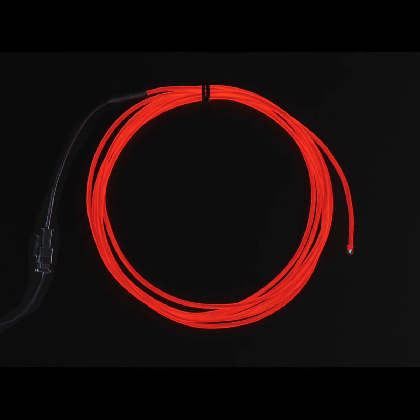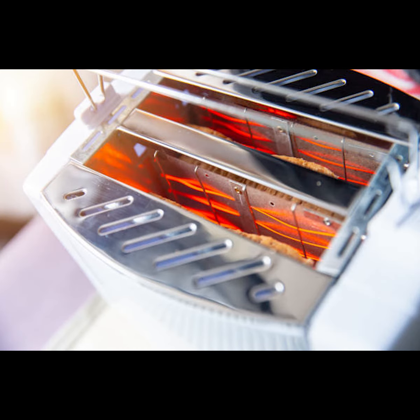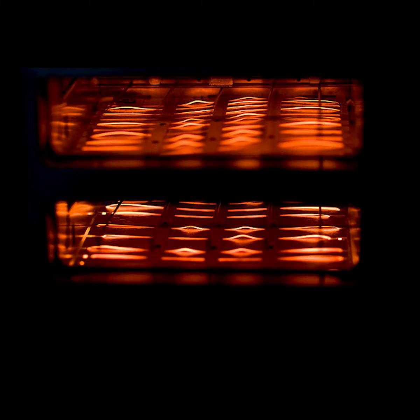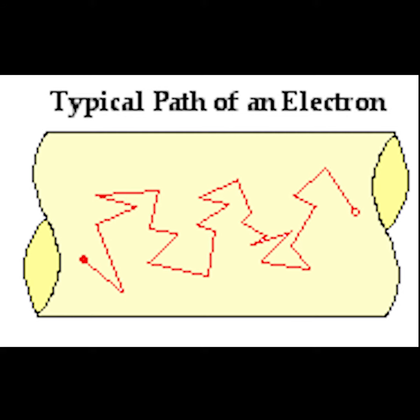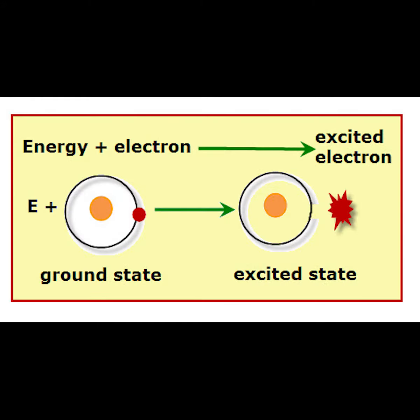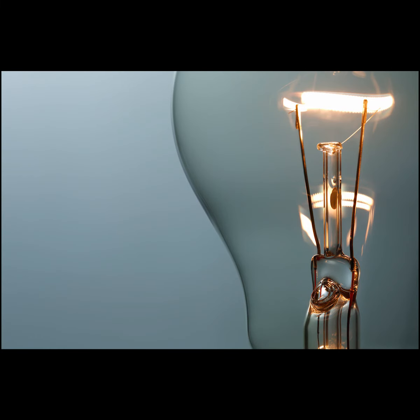Heat is not the only thing produced when electricity flows down a wire. If the wire is thin enough, and provided it's not covered with plastic insulation, its temperature may rise to a degree that it glows red hot. If the wire is glowing, it is also giving off light. The atoms inside the metal wire are heated up by the electrons flowing through it, absorbing some of the energy as heat, becoming unstable, and then giving off some of the energy as light to become stable again.